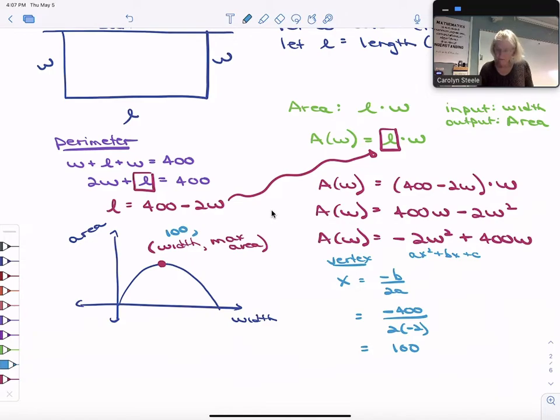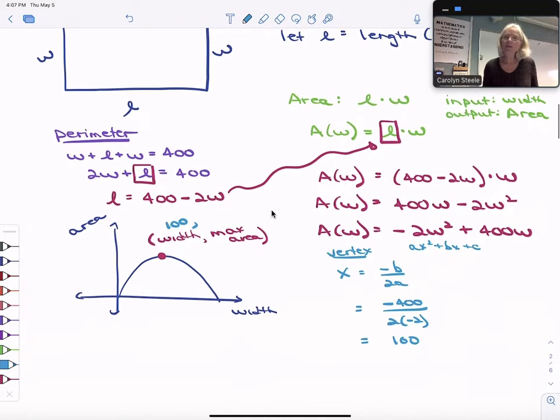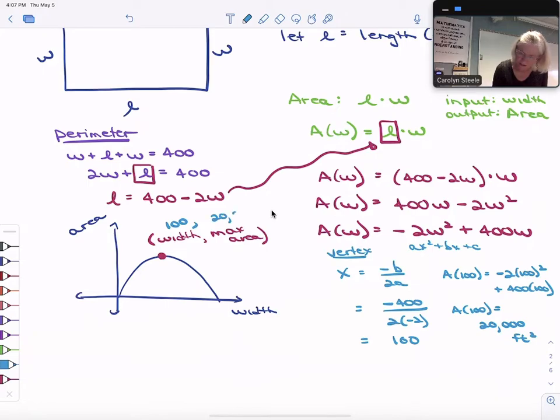Now to find that max area, I can just take that value and substitute it into my function. What is my area when I input 100? I'm just going to take my calculator and use my calculator to figure that out. And I know then the area when it's 100, it's actually 20,000 feet squared. So that's a really big area. This is a big corral. So the y value is 20,000.